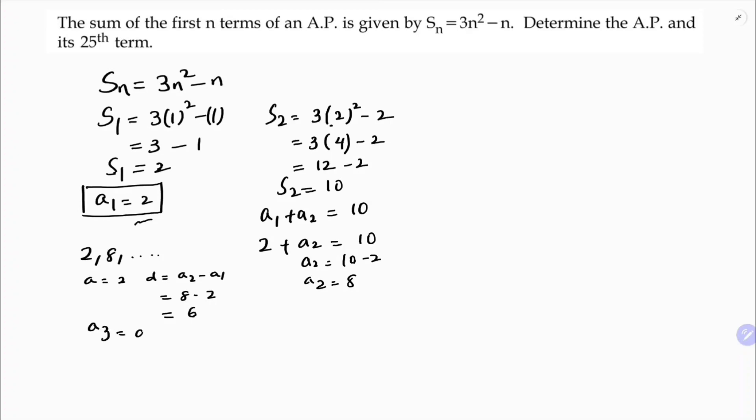a₃ is a plus 2d, a is 2 and d is 6, so 2 plus 12 which is 14. So the series, the AP is, you can write 2, 8, 14, and so on. So you got the AP.